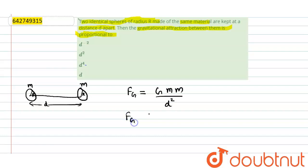So we can say that Fg is inversely proportional to d square, or we can write it as Fg is proportional to d raised to the power minus 2. So gravitational attraction between these two spheres varies as d raised to the power minus 2.